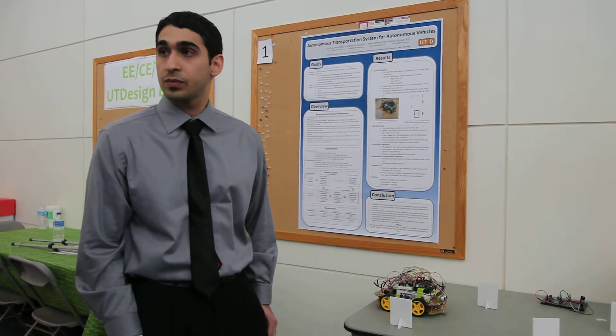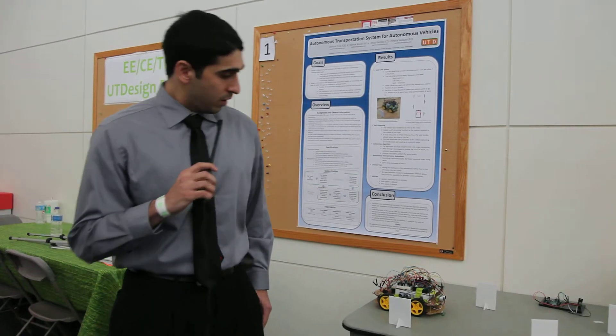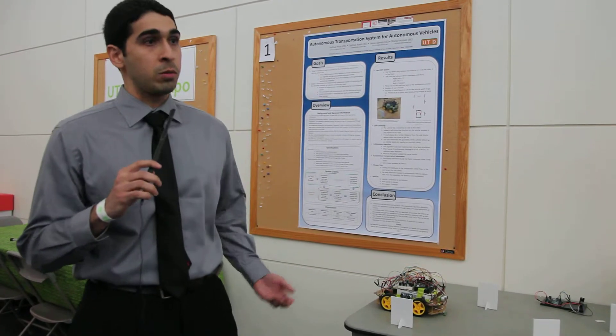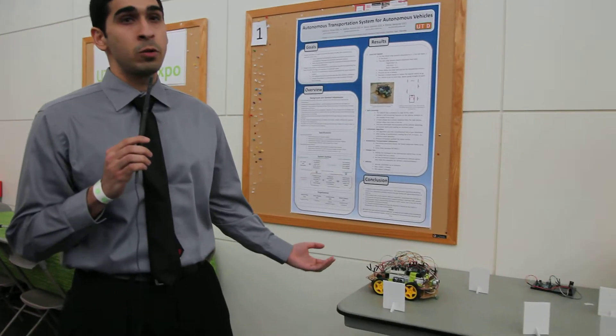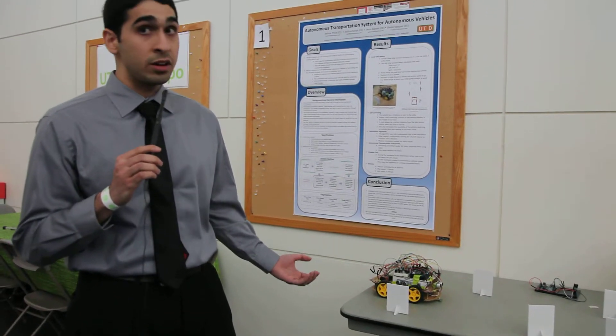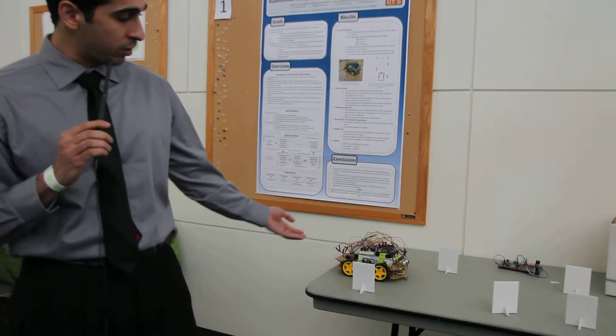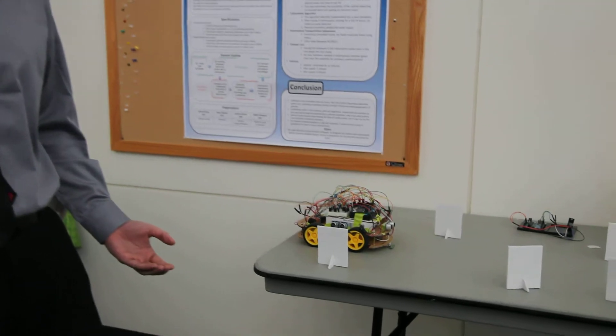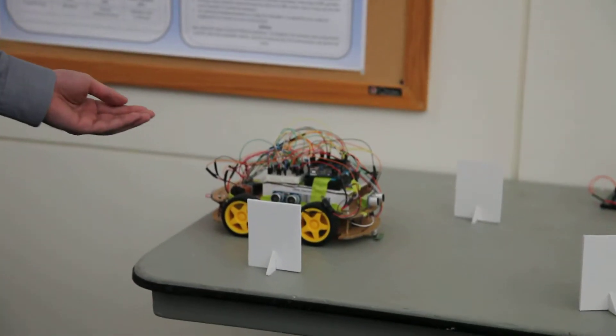How has this prototype developed from the UT Design 1 phase? We ran into multiple problems after UT Design 1. We realized the microprocessor we were using to control the vehicle was too small. It didn't have enough pins, so we had to get a bigger one. We started off using Arduino Mega, and now we're using Omega.